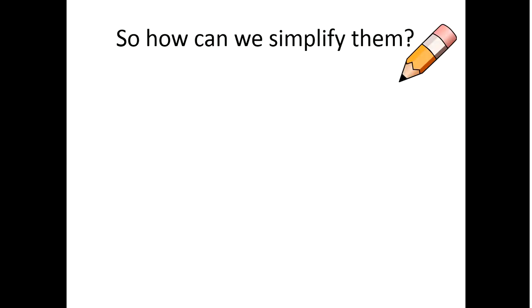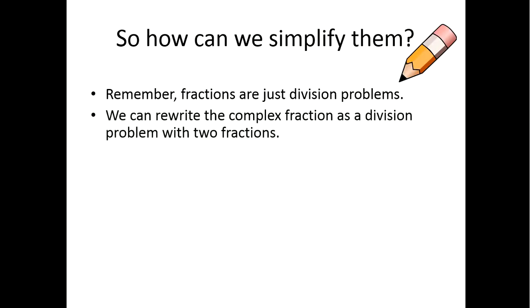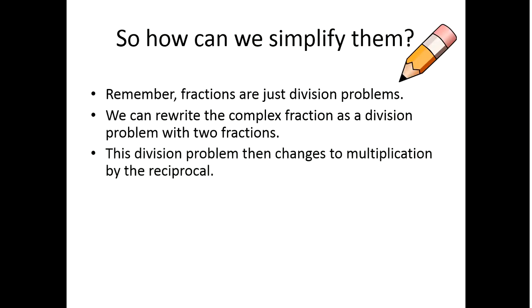So how can we simplify them? Remember, fractions are just division problems rewritten in a new notation. So what we can do is rewrite all complex fraction problems as division problems with two fractions. And then we already know how to do the division problem — it changes to multiplication, I flip it, I can multiply, and then that works. So let's say I have the problem five-sixths divided by two-thirds.